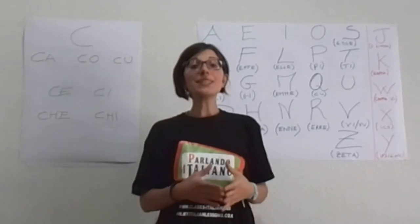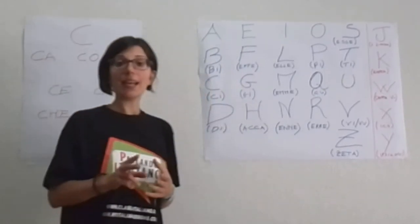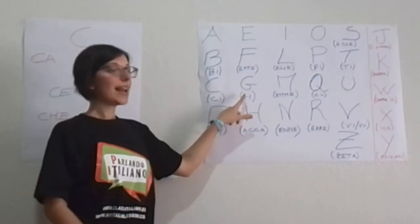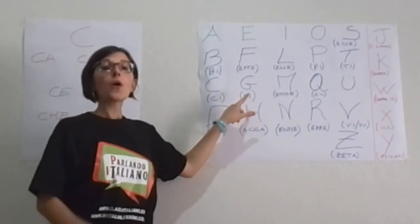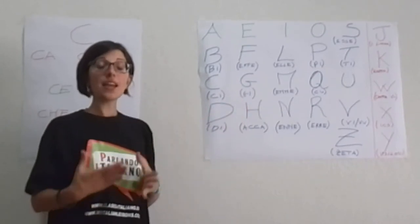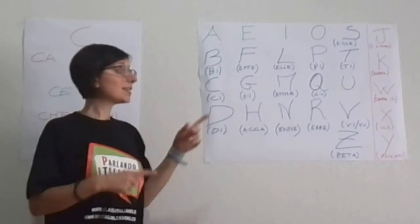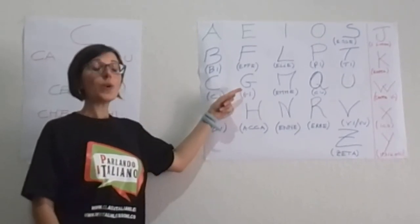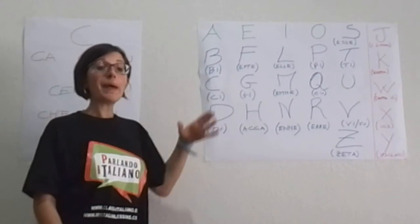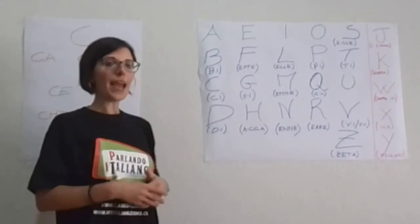Adesso vediamo come si comportano due lettere dell'alfabeto italiano, la C e la G, quando sono seguite dalle diverse vocali. So, the C and G will change their pronunciation depending on the vowel that is going to follow them.